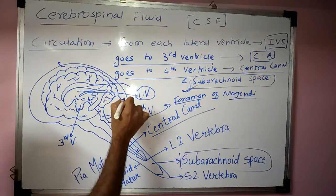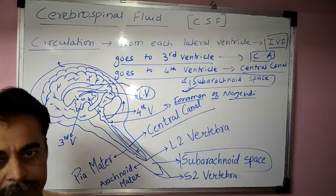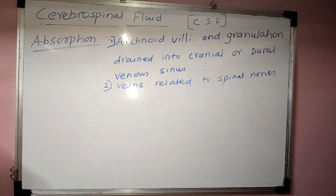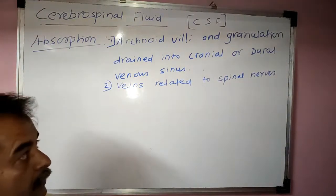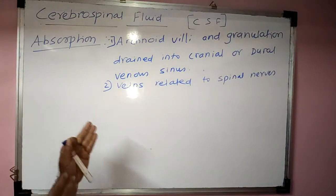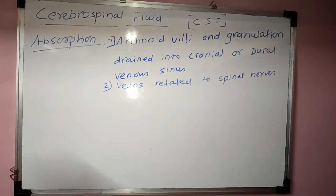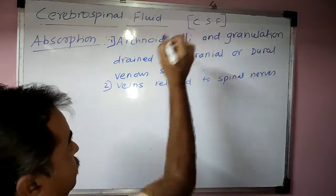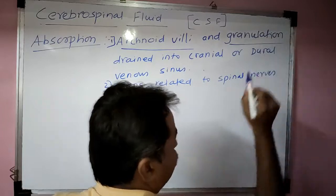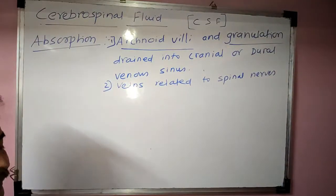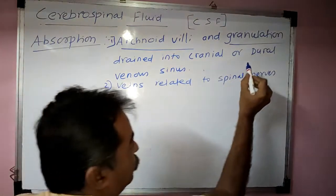From the subarachnoid space, CSF gets reabsorbed. The CSF is absorbed with the help of arachnoid villi and granulations, which are projections of the arachnoid mater into the dura mater.